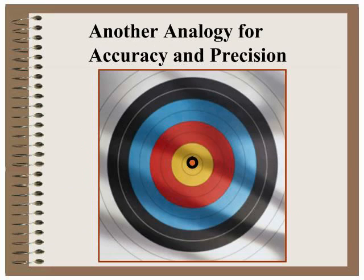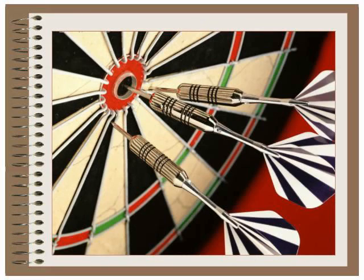Another analogy that's often used for accuracy and precision would be a dart board. So if we look at this example, we can see that all of these darts hit fairly close to the true value and they're fairly close to each other, so I would say yes, they are accurate and they are precise.